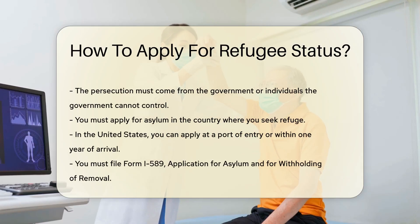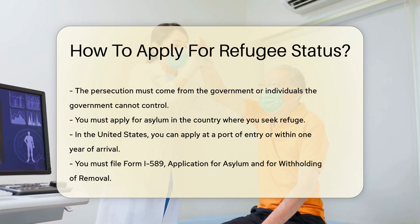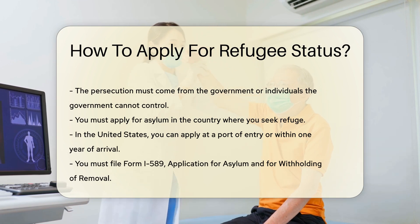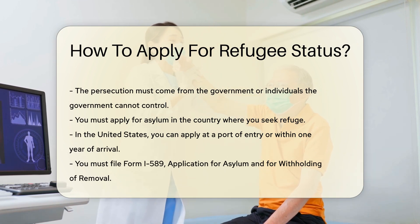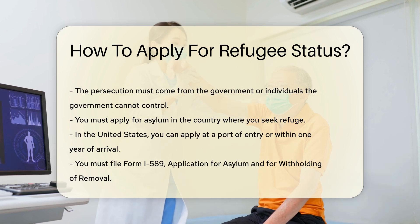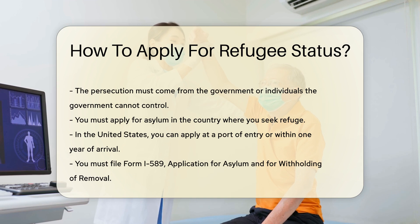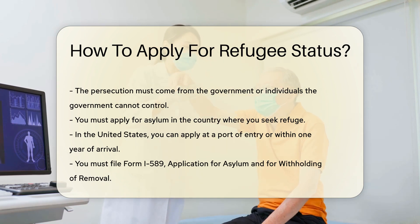Next, you must apply for asylum in the country where you seek refuge. In the United States, you can apply at a port of entry or within one year of arrival. You must file Form I-589, Application for Asylum and for Withholding of Removal. This form is submitted to U.S. Citizenship and Immigration Services, USCIS.